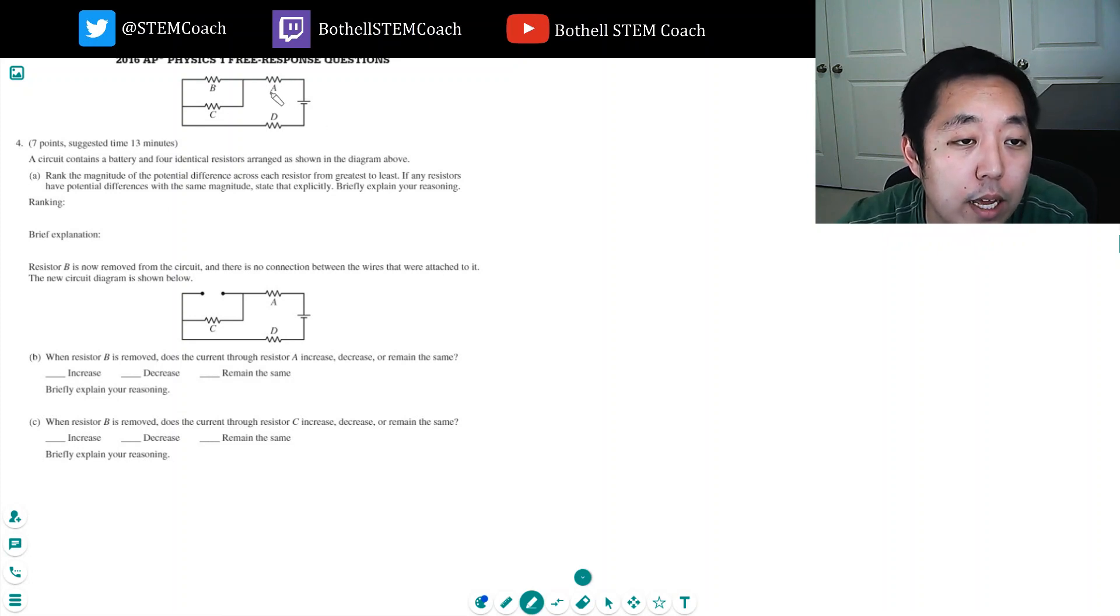Okay, so the way you want to think of it is there is going to be a current flowing of I here, I here. Now it's going to, I has to split between these two paths, right? I is like, think of current as like water flowing. It's got to split between these two paths.